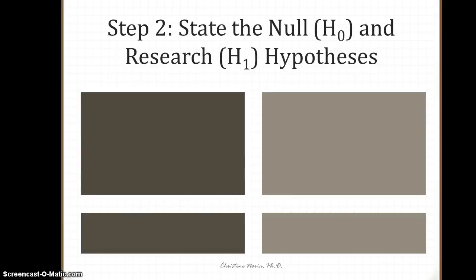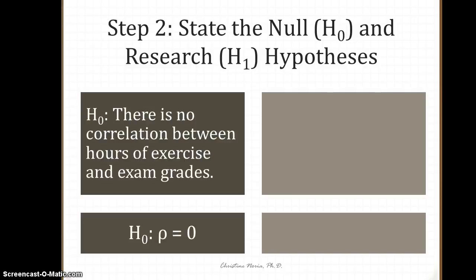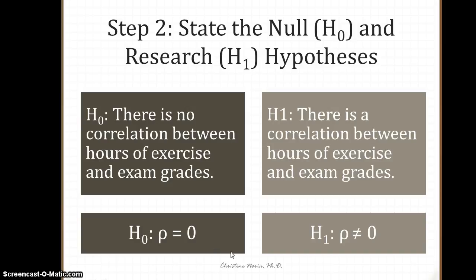In the next step, we state our null and research hypotheses using the Greek letter rho because we're talking about populations. Our null hypothesis is that rho equals zero — there is no correlation between hours of exercise and exam grades. Our research hypothesis is that there is a correlation, written as rho is not equal to zero.